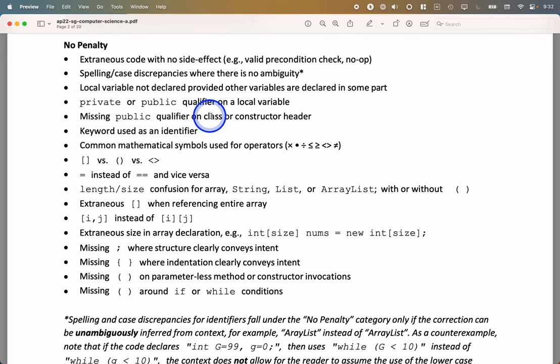If for some reason you put private or public on a local variable that you're declaring, you will not receive a penalty. If you leave out public on the class or constructor, just the class or constructor, not like the methods, you won't receive a penalty. If you accidentally use a Java keyword, a reserved word as an identifier, maybe you named a variable continue, that is not a penalty. You're not expected to have memorized every Java reserved word.